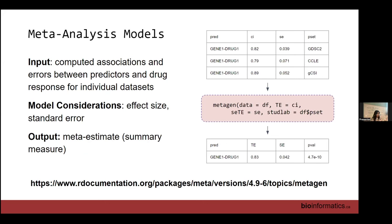Here's an example. Imagine we have gene one and drug one. We calculated their association using data from three P-sets, and we found that in GDSC2, the concordance index is 0.82 — pretty good. We have a concordance index from two other P-sets as well, and we have the standard errors from all of those studies. In R, we will use the metagen function to do the meta-analysis.